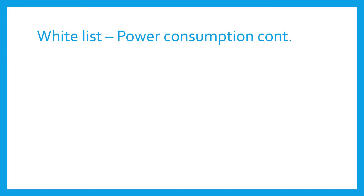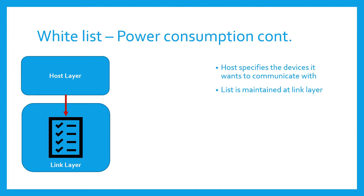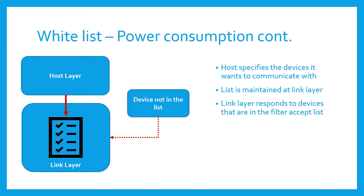The filter accept list, consisting of the address type and address fields, is configured by the host layer and maintained at the link layer. Upon configuration, the link layer uses this list to filter peer devices. Any communication from devices that aren't in the filter accept list is simply ignored. As the link layer doesn't respond to every transmission, power consumption is obviously reduced.